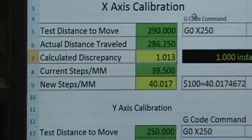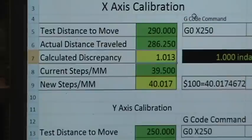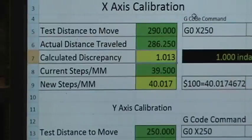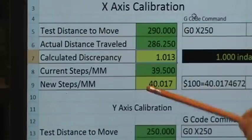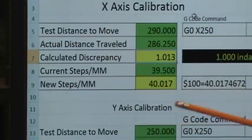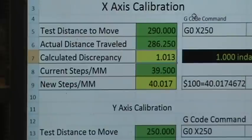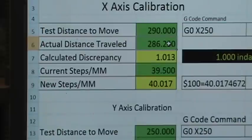Okay, here's the spreadsheet. I'm not showing you the whole sheet here. I've tried to zoom in so that you can see the numbers easier, but the part we're focusing on really is just this one section right here. For test distance to move, I put in 290 because that's how far we told the machine to move, 290 millimeters. The actual distance traveled was 286, so I'm going to put that in right here, 286.